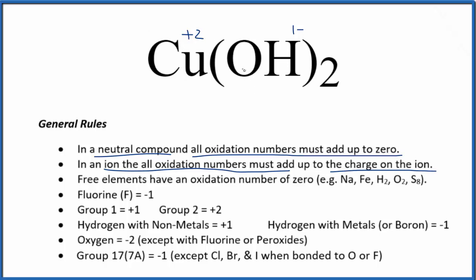If you wanted to figure out the oxidation number on the oxygen and the hydrogen, oxygen is always going to be minus 2, with a few exceptions. And then hydrogen, when it's bonded to nonmetals, like oxygen, it's going to be plus 1. So those are the oxidation numbers on the oxygen and hydrogen in Cu(OH)₂.